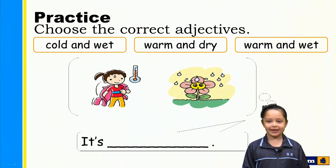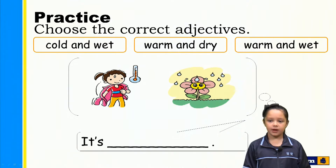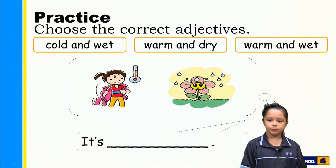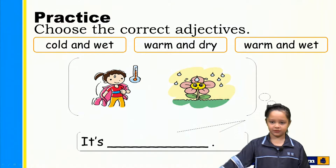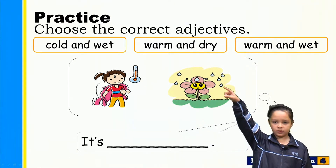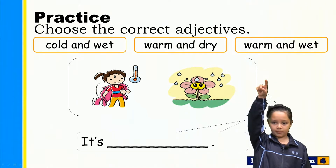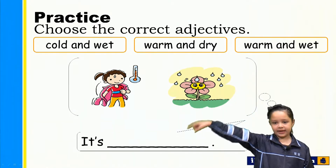Now let's try to do some questions. Look at the picture carefully. We have three options: cold and wet, warm and dry, warm and wet.